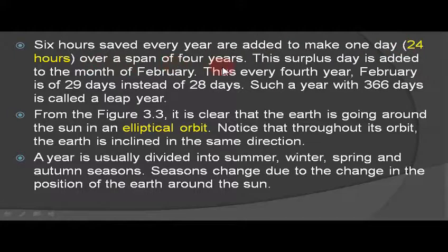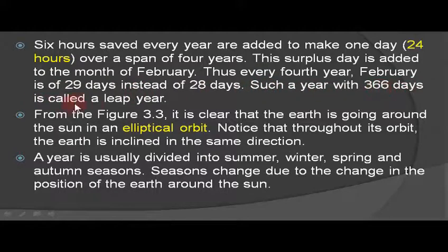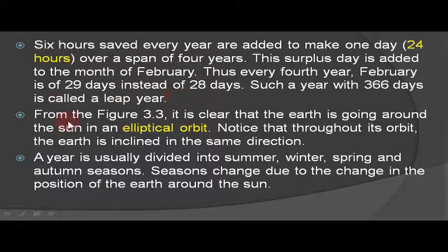The six hours saved every year are added to make one day of 24 hours over a span of four years. This surplus day is added to the month of February. Thus every fourth year, February has 29 days instead of 28 days. Such a year with 366 days is called a leap year.